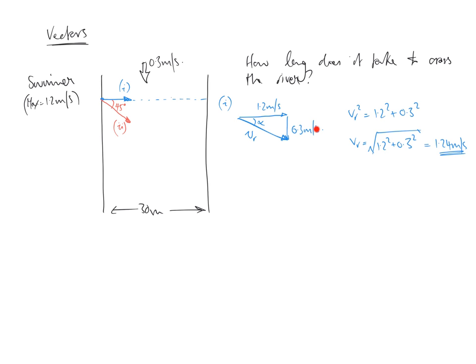What about the angle? We've got all three lengths now, so we can use any trig identity. I'll use the opposite and the adjacent. So tan of alpha is going to be opposite over adjacent, which is 0.3 over 1.2. Therefore, alpha is inverse tan of 0.3 over 1.2, giving me 14 degrees.